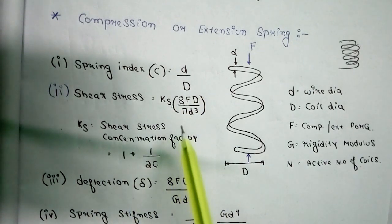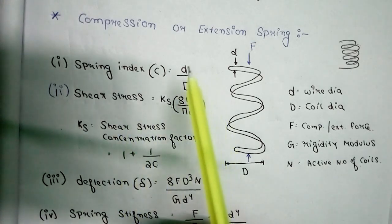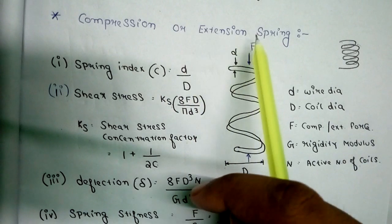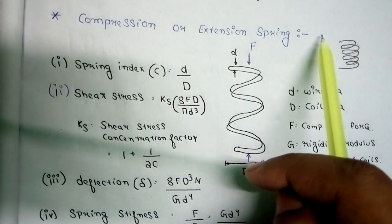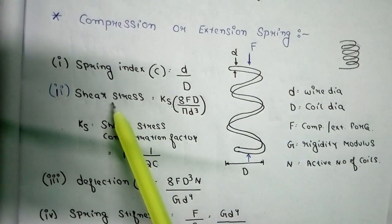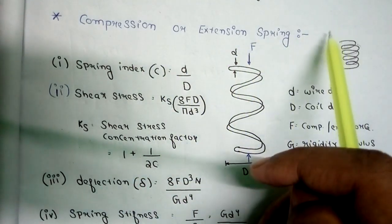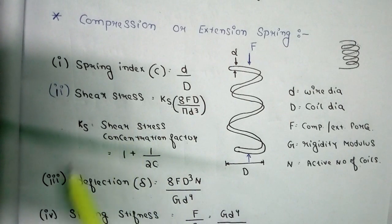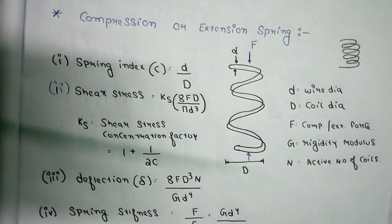If Ks is not given in the question, remember the formula: Ks = 1 + (1 / 2C), where C is the spring index C = d / D. One very important point: in the case of a compression or extension spring, the stress induced in the spring is shear stress. Many exam questions ask which kind of stress is induced — the answer is shear stress.